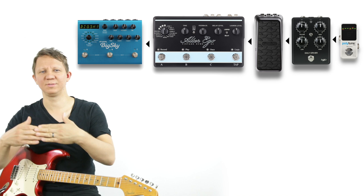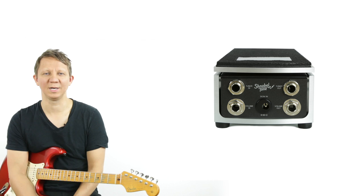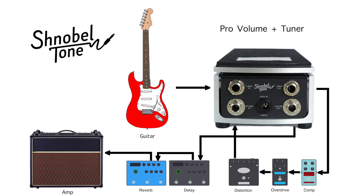In my volume tuner mods — the Dunlop Mini volume pedal and the Ernie Ball volume pedal — I specifically leave the tuner input and output separate from the volume input and output, so you can place the pedals anywhere in the chain. You can go into the tuner first, then out into drive pedals, then back to the volume, or go tuner straight into the volume pedal. I'd recommend the tuner first right out of your guitar so overdrives or fuzzes don't mess up your tuning.